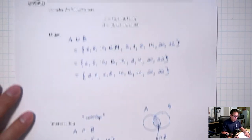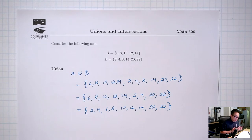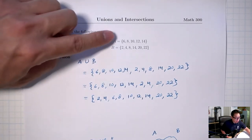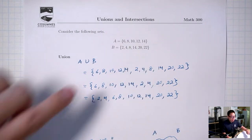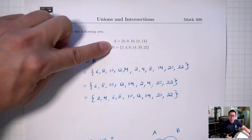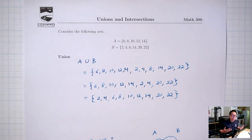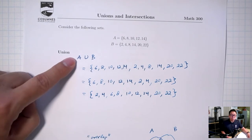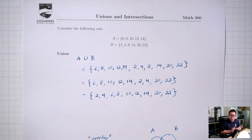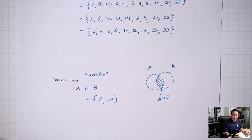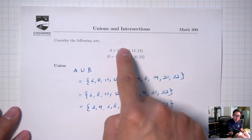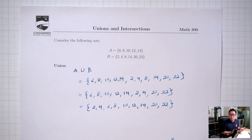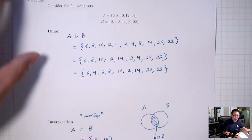Where might you see this in the real world? Let's pretend that you and your significant other are getting married. Say the first set is your friends and family — your guest list. A is your guest list and B is your partner's guest list. You have to combine those two guest lists together to get a single final guest list, and what you're doing is basically the union. The intersection would be people that are in both lists at the same time — those are mutual friends.